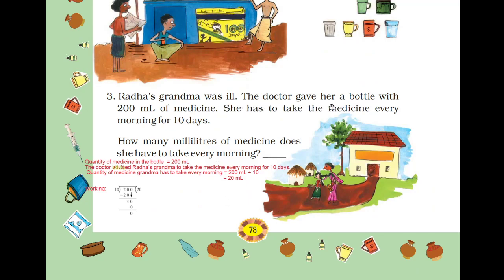Moving to the next question. Radha's grandma was ill. The doctor gave her a bottle with 200 ml of medicine. She has to take the medicine every morning for 10 days. How many milliliters of medicine does she have to take every morning? What is written in the question: Radha's grandma has to take the medicine every morning for 10 days. Quantity of medicine in the bottle is 200 ml — already given in the question.